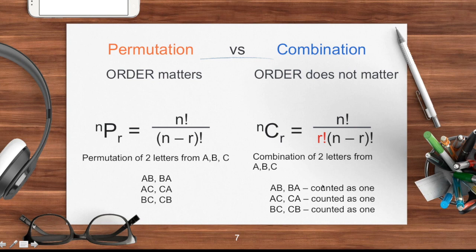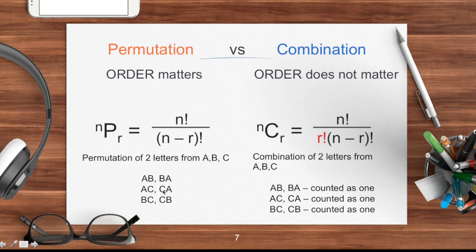Now if we don't consider order, for the combination of two letters from A, B, C — combination of three taken two — A-B and B-A are counted as one, A-C and C-A is just one, B-C and C-B is just one. So we have a total of three combinations. Three permutation taken two is six, and combination of three taken two is three. Six divided by r (which is two) gives three — that illustrates the difference between the two formulas.